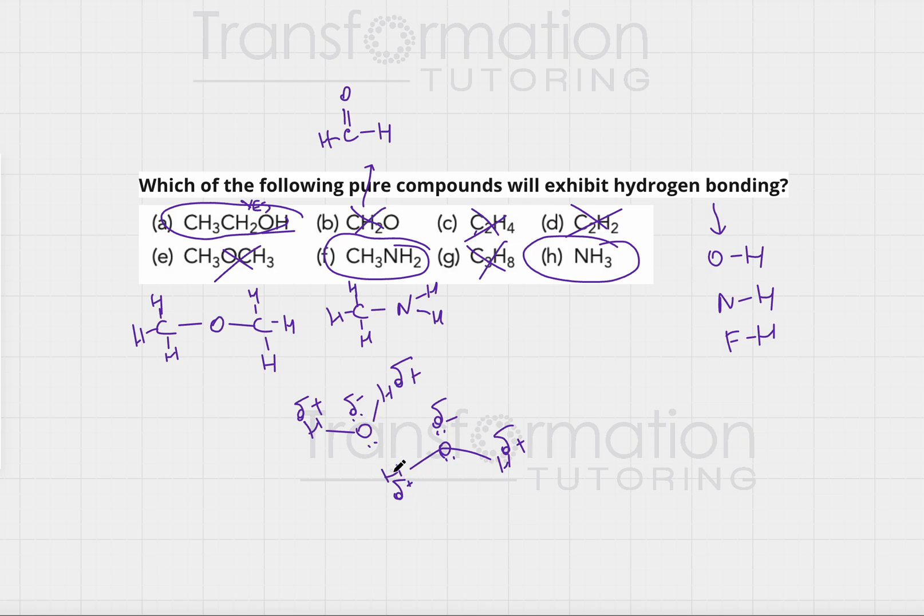Now, minus and plus are opposite charges and they attract each other. So, the oxygen on this water will be attracted to the hydrogen on this water molecule and this force of attraction, which is not an actual bond, is called hydrogen bond.